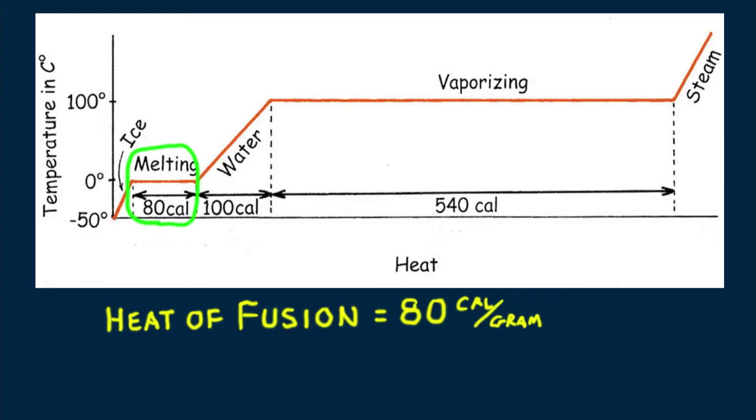As we continue applying heat, the temperature of the water rises. It rises one Celsius degree for each one calorie of applied heat. Remember that, by definition, one calorie increases one gram of water by one degree Celsius.